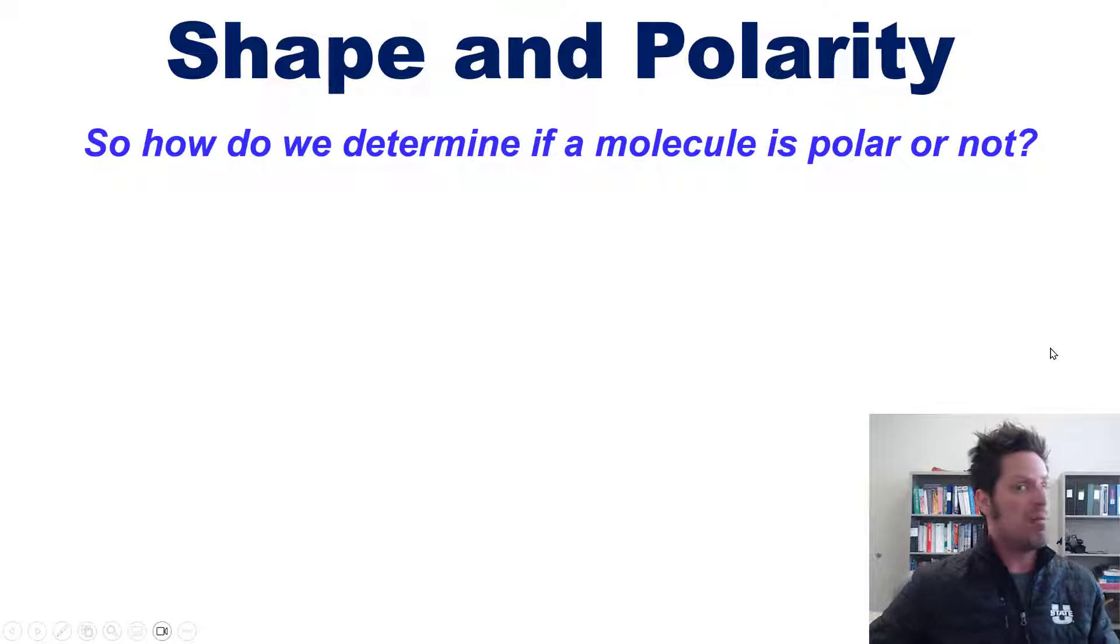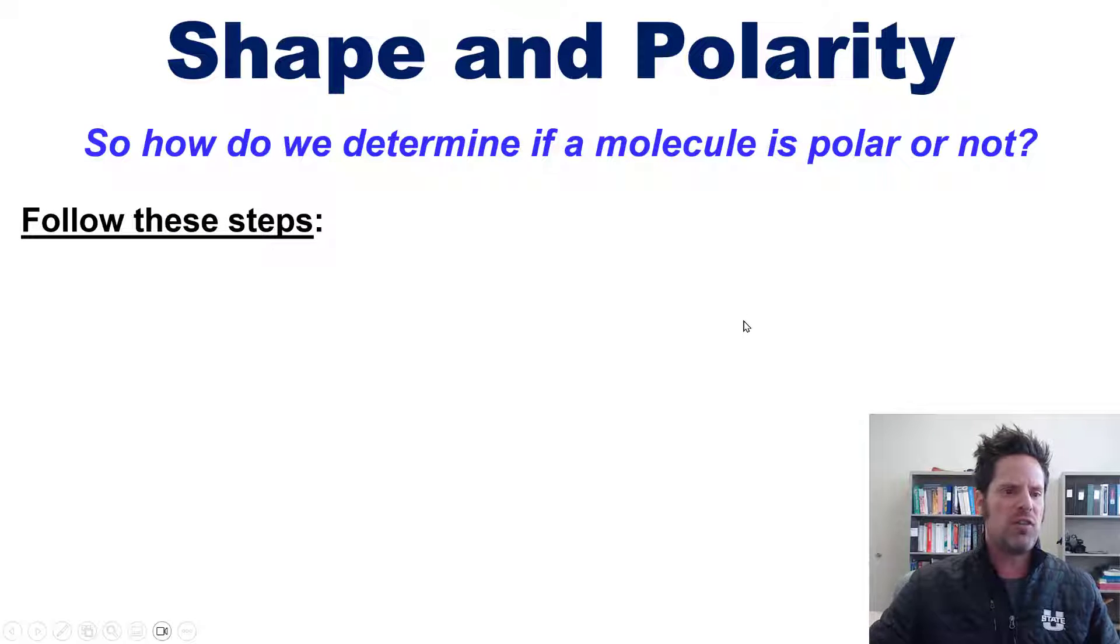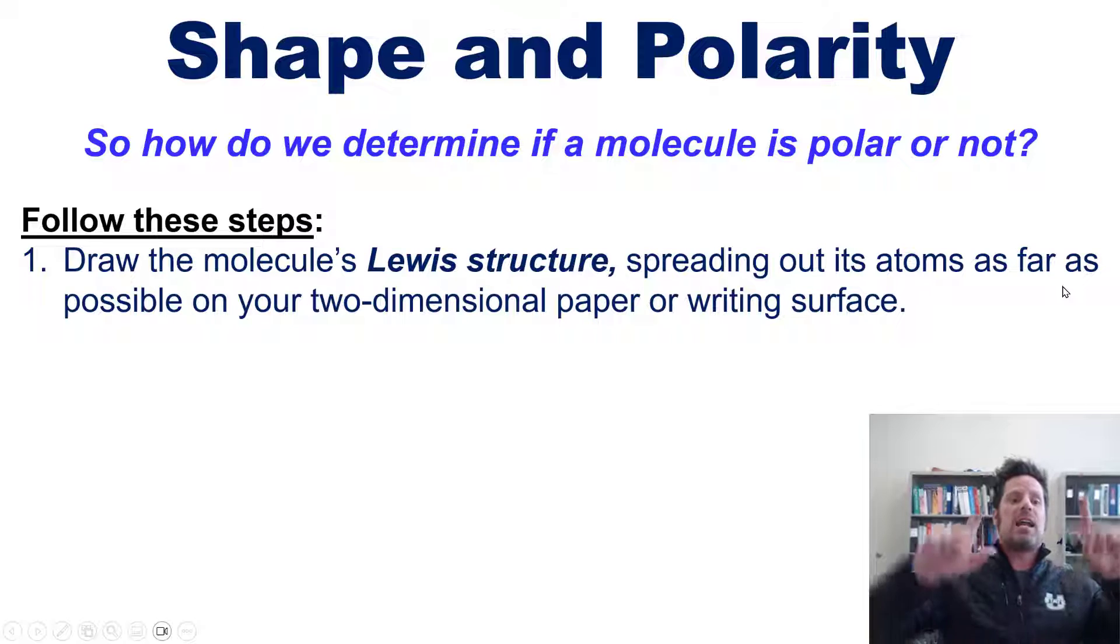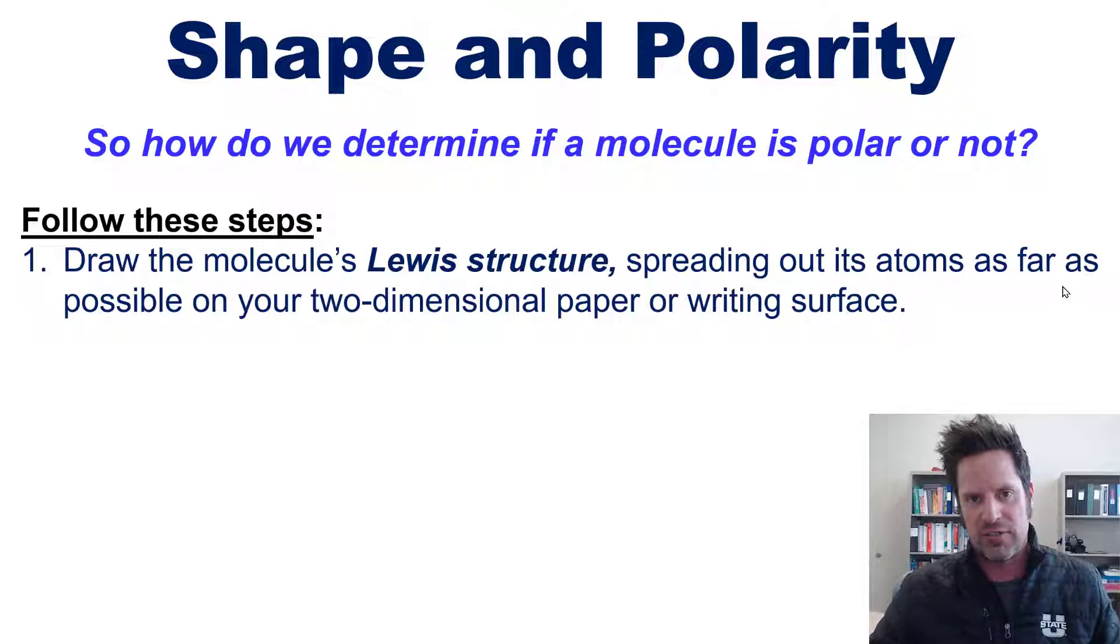So how in the world do you determine if a molecule is polar or not overall? Well, we follow these steps. First, draw the molecule's Lewis structure spreading out its atoms as far as possible on your two-dimensional paper or writing surface.